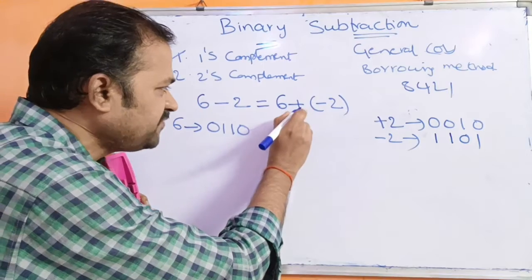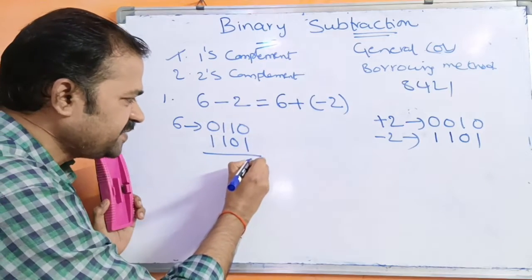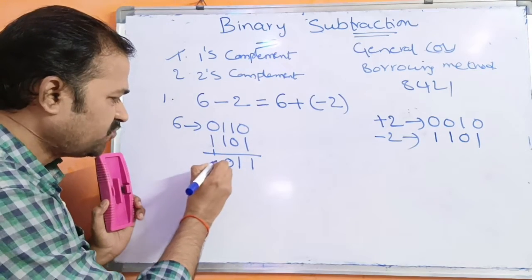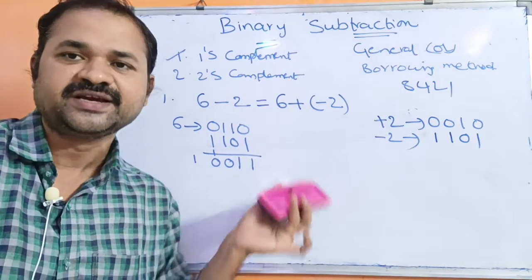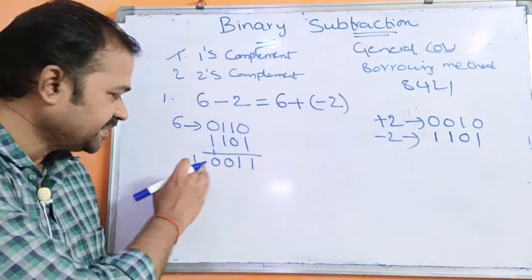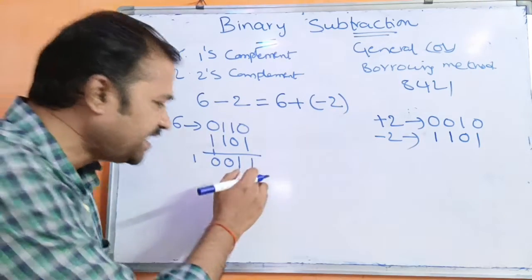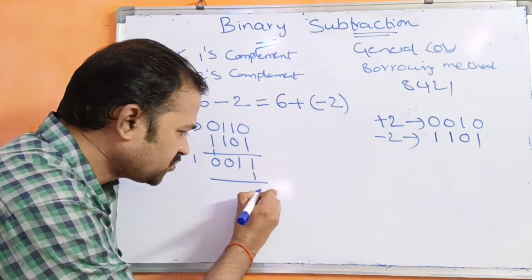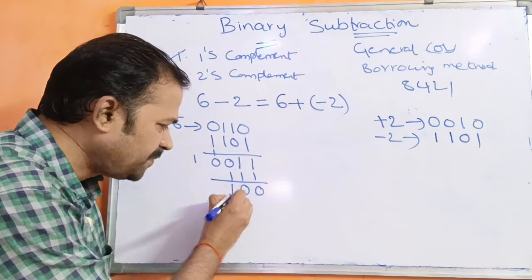So now we add 0110 and 1101. 0 plus 1 is 1. 1 plus 0 is 1. 1 plus 1 is 0 with carry 1. 1 plus 1 is 0 with carry 1. After performing the addition, if we get any carry, that carry will be added to the least significant bit. Here the carry is 1, so we add it to the LSB. 1 plus 1 is 0 with carry 1. 1 plus 1 is 0 with carry 1. 0 plus 1 is 1. Result: 0, 1, 0, 0.